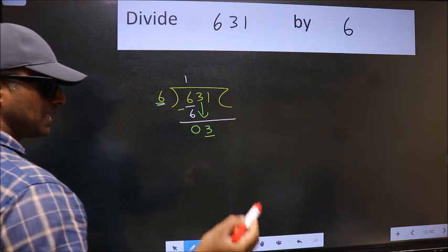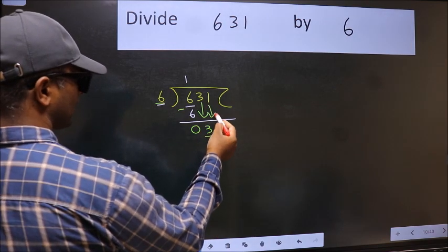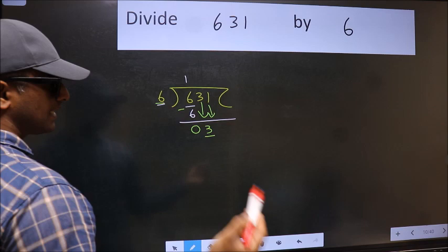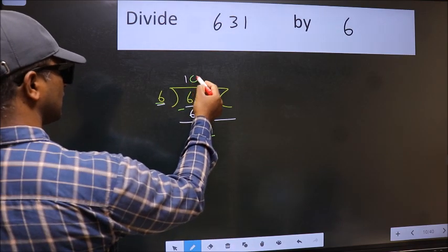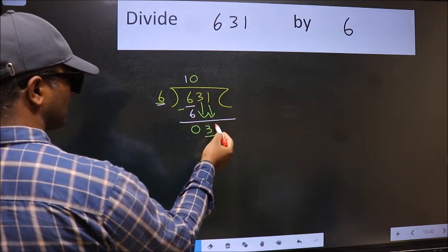So we should bring down the second number. The rule to bring down the second number is we should put 0 here. Then only we can bring this number down.